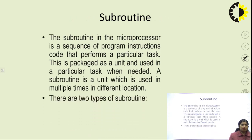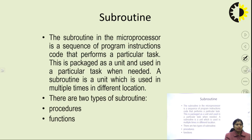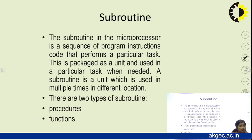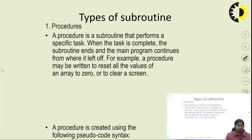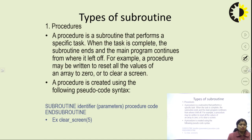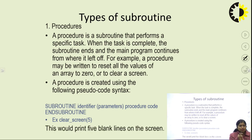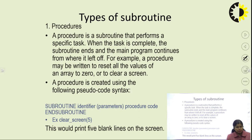A subroutine is of two types: procedure and function. A procedure subroutine performs a specific task and returns to the main program when complete. For example, a procedure called 'clear screen of 5' would print 5 blank lines on the screen — it performs the specific task and then returns to the main program.